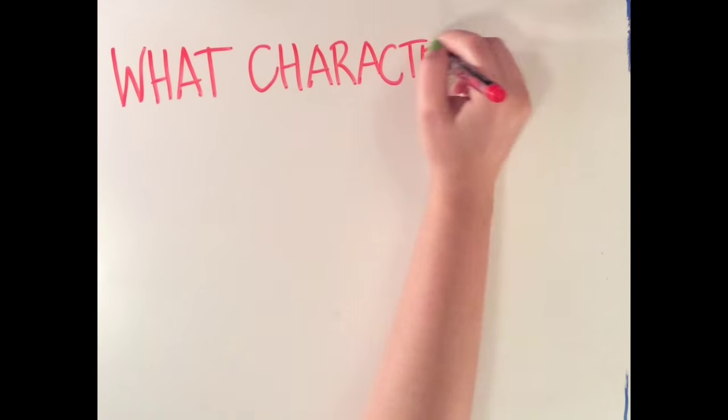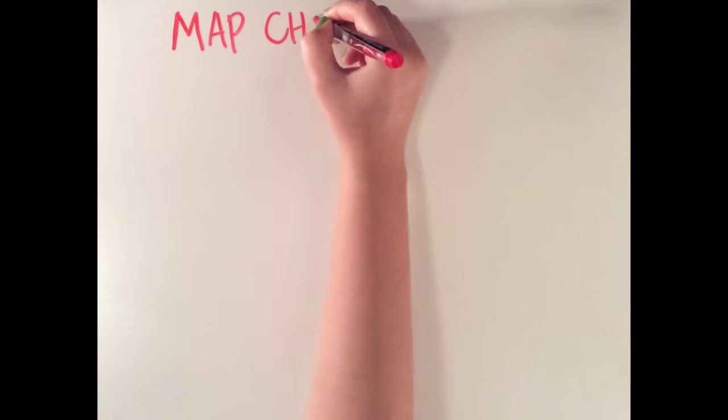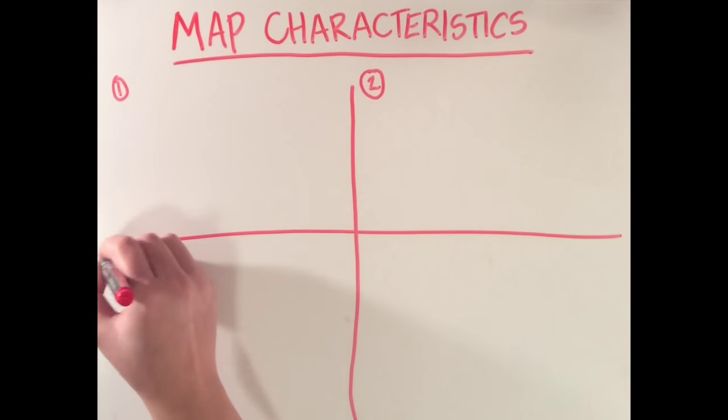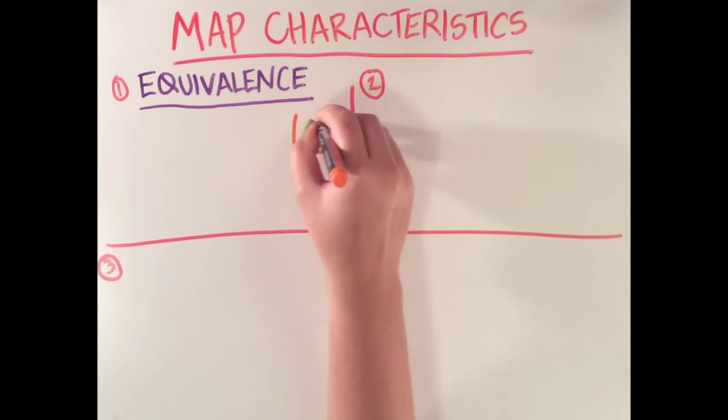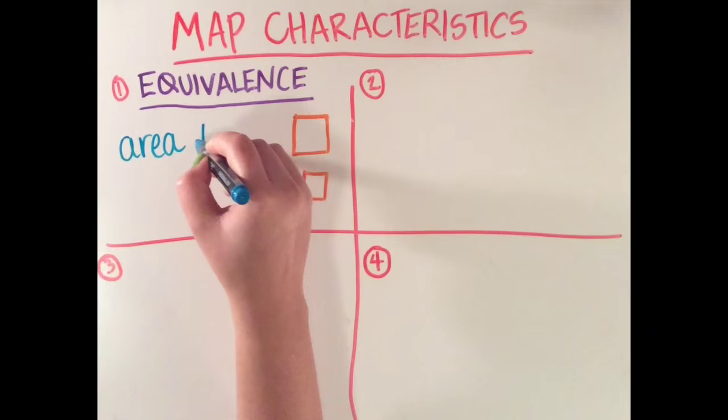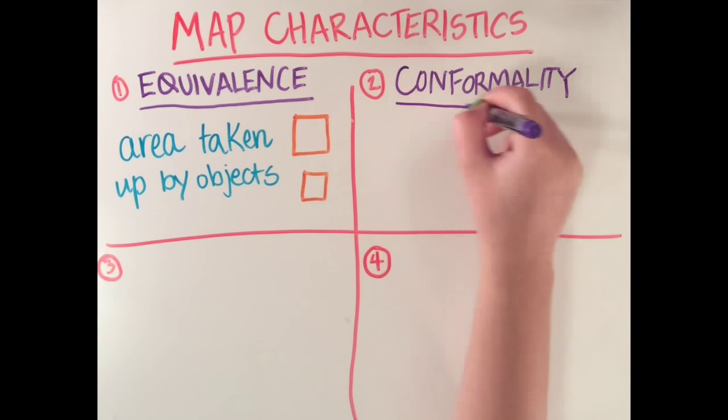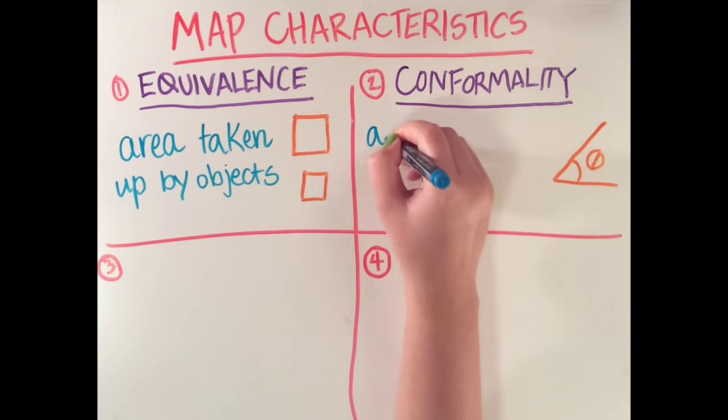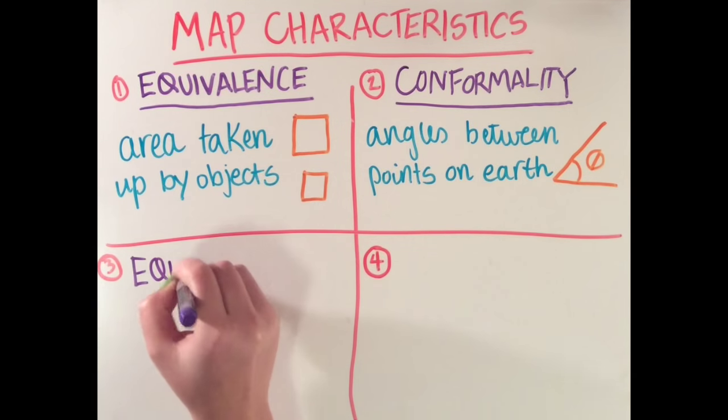What characteristics can map projections keep or distort? There are four main characteristics that projections will either preserve or alter. The first is equivalence. Preserve this and the proportion of areas taken up by different objects on Earth will remain accurate. The second is conformality. Maps that preserve this maintain the angle measurements between points on the surface of the Earth.